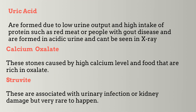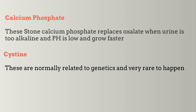Uric acid stones are normally formed due to low urine output and high intake of protein such as red meat, or in people with gout disease, and are formed in acidic urine — they cannot be seen on a plain x-ray. Calcium oxalate stones are caused by high levels of calcium and foods rich in oxalate. Struvite stones are associated with urinary infection or kidney damage but are very rare. Calcium phosphate stones normally replace oxalate when urine is too alkaline and pH level is low, and they can grow faster than calcium oxalate stones. Cystine stones are related to genetics and are very rare.